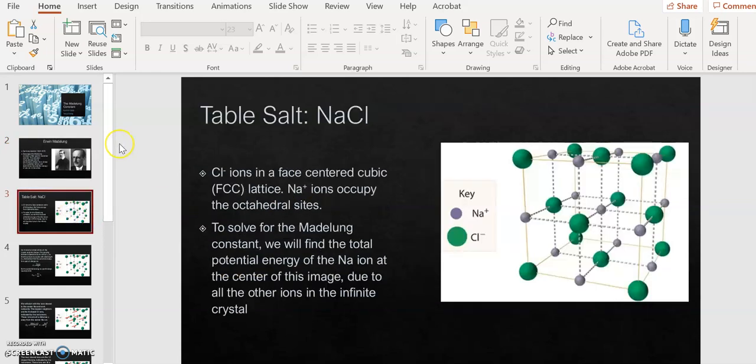The Madelung constant is different for different crystals, but we're going to go with the simplest possible example, which is sodium chloride. Sodium chloride is nice because the charge on a sodium ion is plus E, and the charge on a chlorine ion is minus E. E here is 1.602 times 10 to the minus 19 Coulombs, the fundamental charge on a proton or electron in magnitude. In this sketch of a portion of a sodium chloride lattice, the sodium ions, which are positively charged, are pictured in gray, and the chlorine ions are pictured in green.